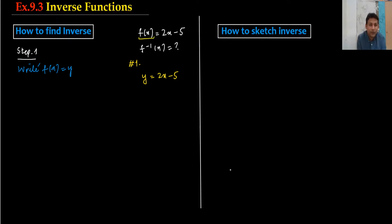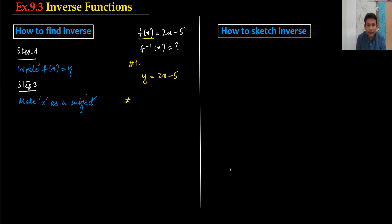Step number two: we make x the subject. The subject should always be on the left-hand side and positive. So from y = 2x − 5, we rearrange to get y + 5 = 2x, and then divide by 2: x = (y + 5) / 2. This is step number two.